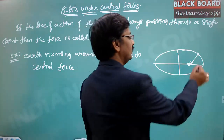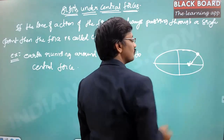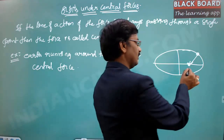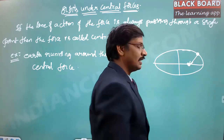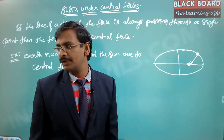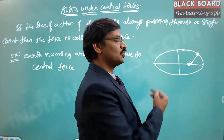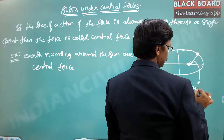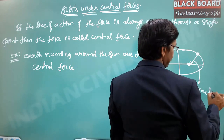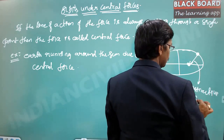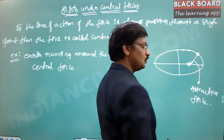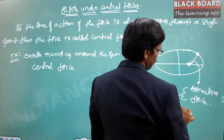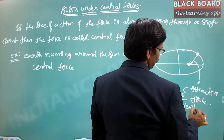There is a mass associated with the Earth and a mass associated with the Sun. These two are actually getting attracted to each other, so there is an attractive force between them. This attractive force is due to Newton's law of gravitation.